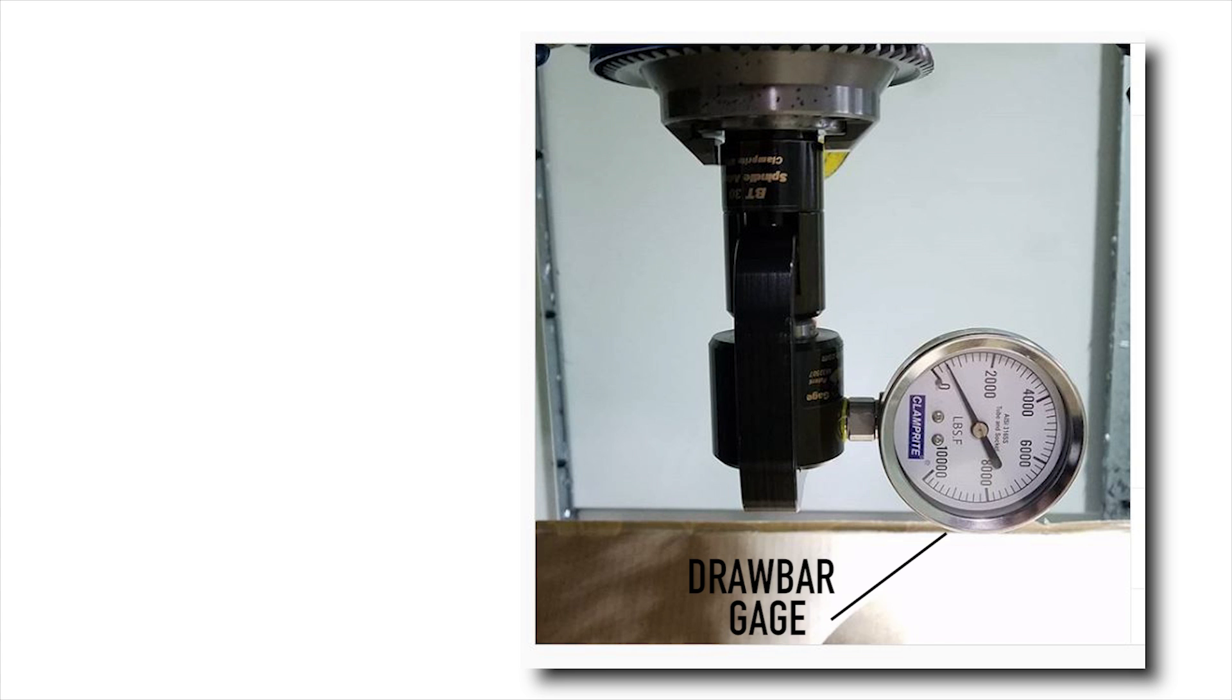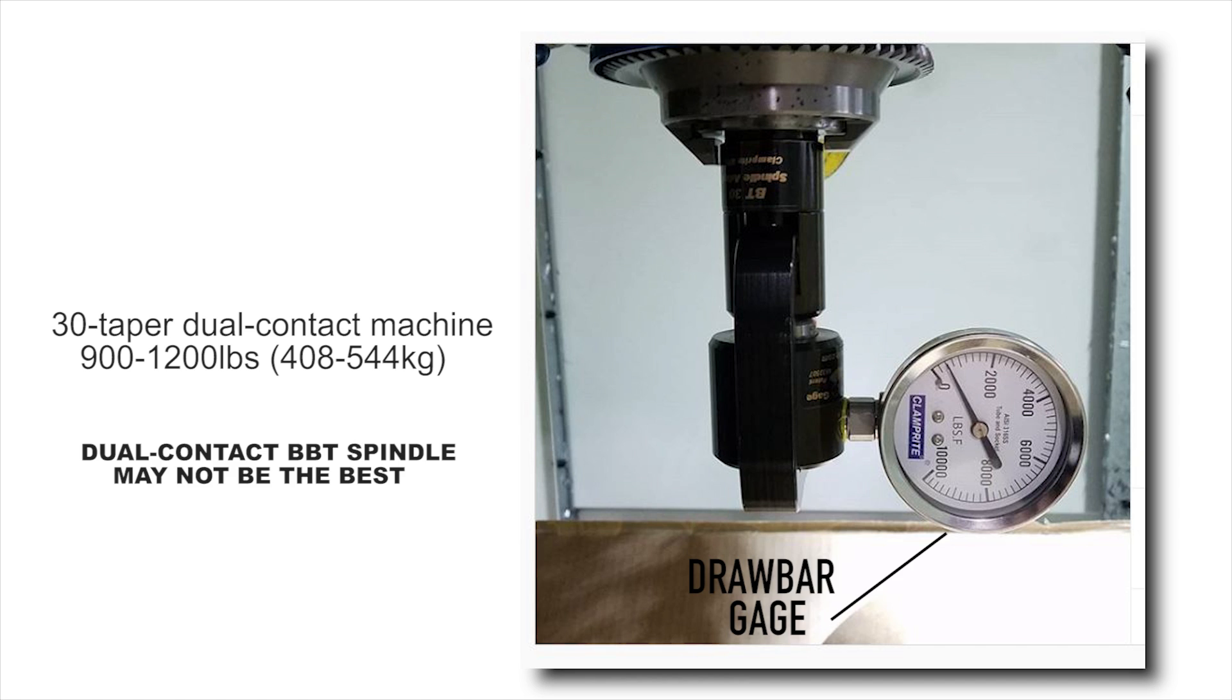Typically on a 30 taper dual contact machine, we're seeing readings north of 900 up to around 1200 pounds. So if you're looking at one of these machines for heavy roughing in steels, for example, it's not a deal breaker, but something you need to be aware of. Dual contact BBT spindle may not be the best choice on one of these machines.